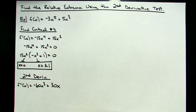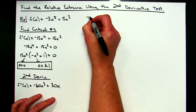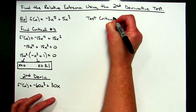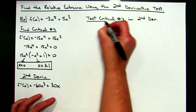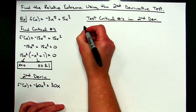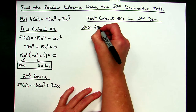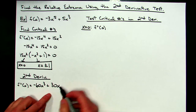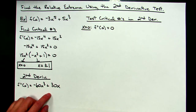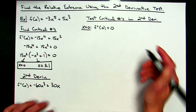Now I need to test my critical numbers in the second derivative in order to use the second derivative test. Let's start with x equals zero. I'm going to plug that into my second derivative. If I plug in zero, I'm going to get clearly zero. So right off the bat, f double prime of zero equals zero, which means the second derivative test fails for determining whether x equals zero is a max, min, or neither.